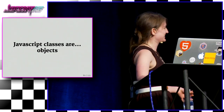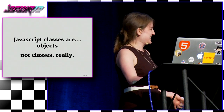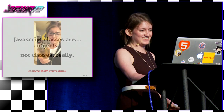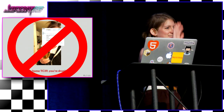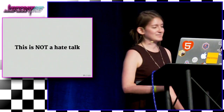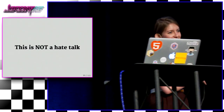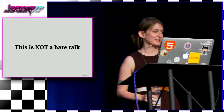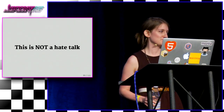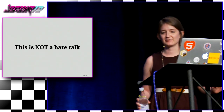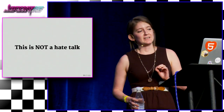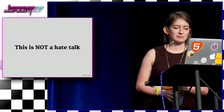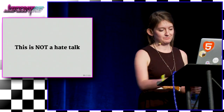So JavaScript classes are kind of like objects, and they're not really classes at all. I'm not saying go home TC39, you're drunk — this is not a hate talk. I love TC39. Shout out to all the work by everyone in open source who does literally anything. I just want to add a perspective and not play down anything that people have built, because those people are awesome.